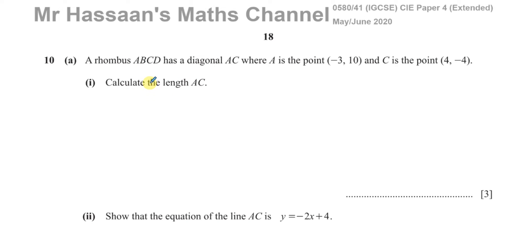Welcome back. This is Mr. Hassan's Math Channel. This is question number 10 from the May-June 2020 0580 paper 4 variant 1, the Cambridge IGCSE paper. This is question 10 part A about a rhombus ABCD which has a diagonal AC, where A is the point (-3, 10) and C is the point (4, -4). Part one of this question is asking us to find the length of AC.